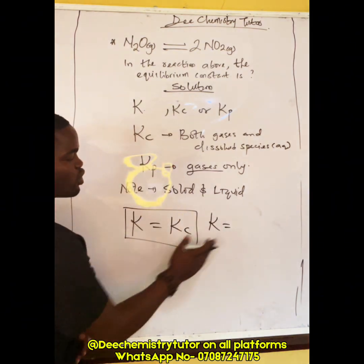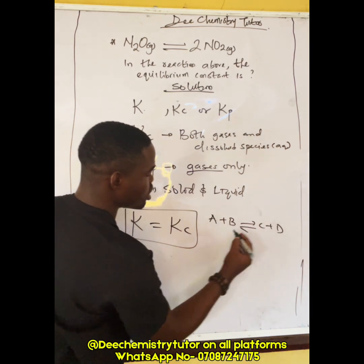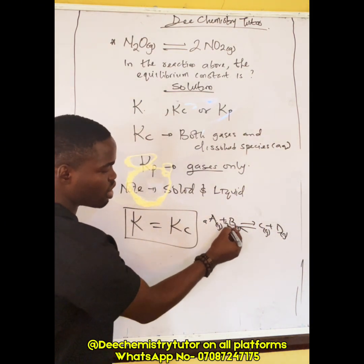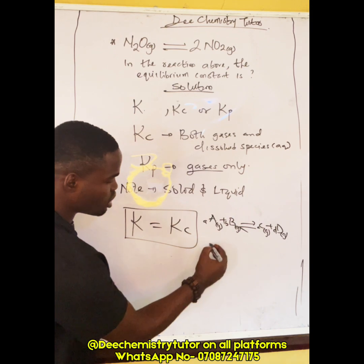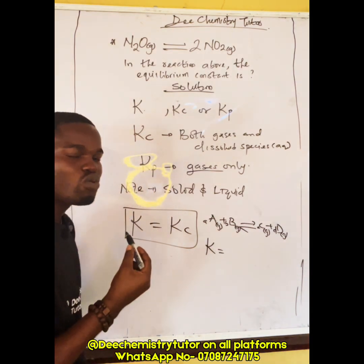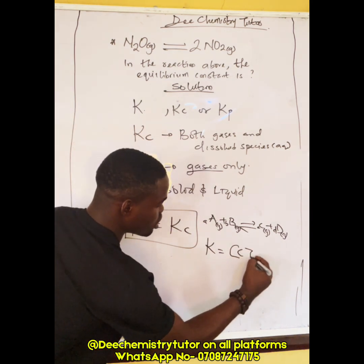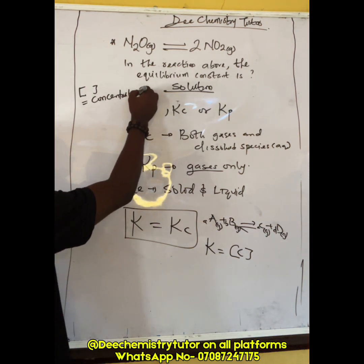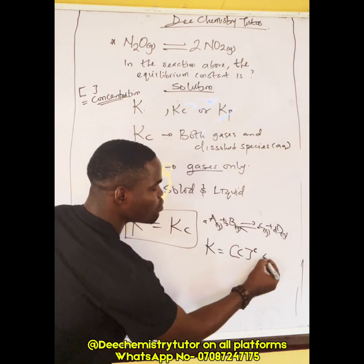Let me give you a hypothetical reaction: A + B → C + D, where all species are in the gaseous state, with coefficients a, b, c, and d respectively. The equilibrium constant K for this reaction is the concentration of C raised to the power c, multiplied by the concentration of D raised to the power d — note it is multiplication, not addition.